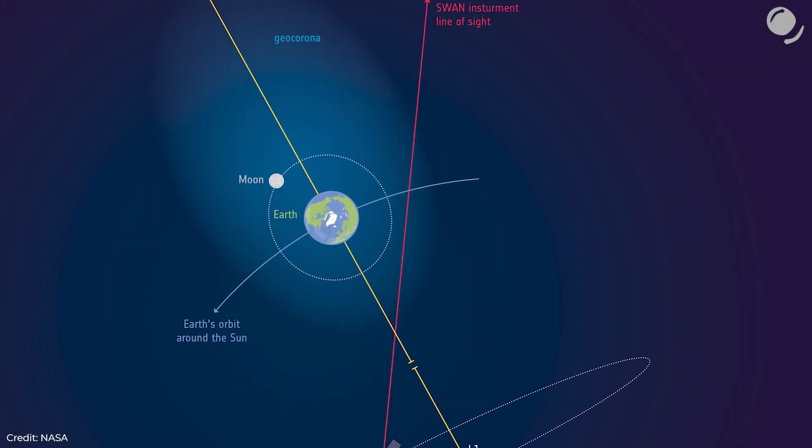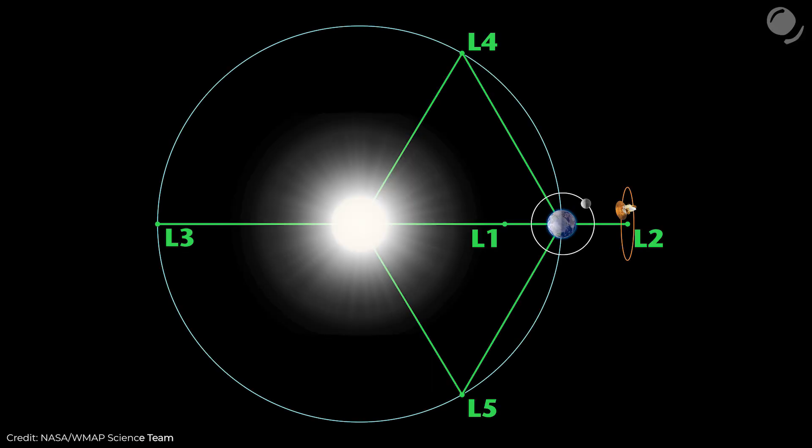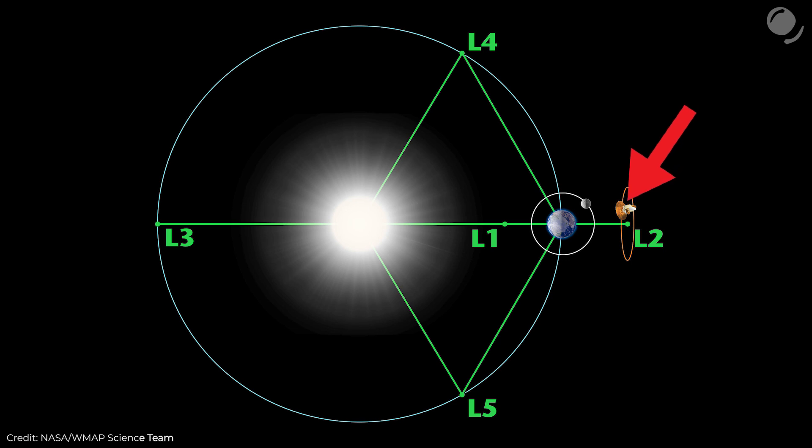L1 point is used for spacecraft that study the Sun, for instance, SOHO observatory. In the case of L2 point it's the opposite. Here the object slows down because it's farther away from the Sun, but along this line the Earth adds to the Sun's pull, so the object speeds up. This point is used for observatories that study deep space. Herschel and Planck used to operate there, Gaia is working there right now, and James Webb telescope will be delivered to L2 point.